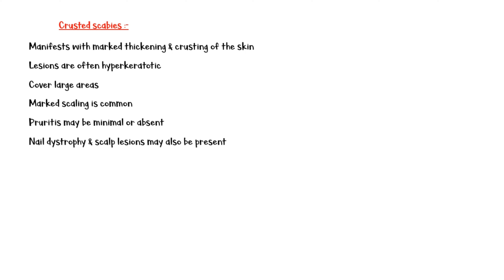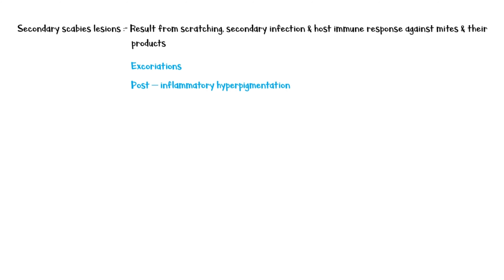Crusted scabies manifests with marked thickening and crusting of the skin. The lesions are often hyperkeratotic and cover larger skin areas; marked scaling is common. Pruritus may be minimal or absent, and nail dystrophy and scalp lesions may also be present. Secondary scabies lesions result from scratching, secondary infection, and host immune response against mites and their products. Characteristic findings include excoriations, post-inflammatory hyperpigmentation, erythroderma and widespread eczema, and honey-colored crusting.